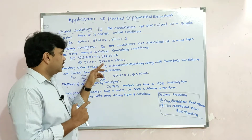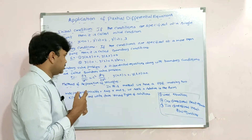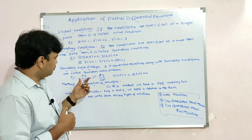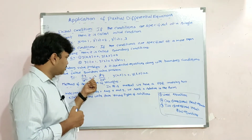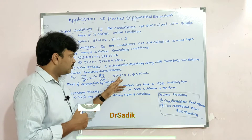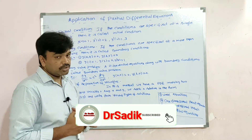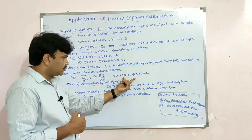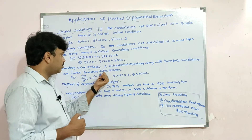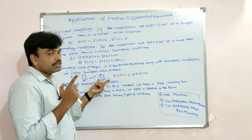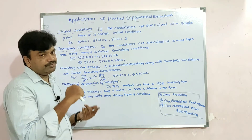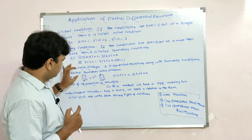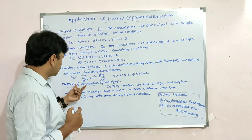A differential equation along with boundary conditions is called a boundary value problem. For example, ∂²y/∂t² = c²·∂²y/∂x² with y(0, t) = 0 and y(n, t) = 0. These two are boundary conditions, so this problem is called a boundary value problem.